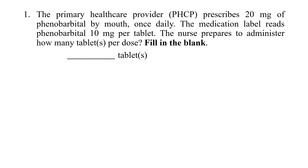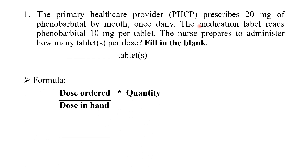This is one of the simplest questions of drug dose calculation. It will be very easy for some of you, and if you are new to it, you may find it very helpful. For this type of question, you need to know the formula. The formula is: dose ordered divided by dose in hand, multiplied by quantity. In some books you may find 'volume' instead of 'quantity'.